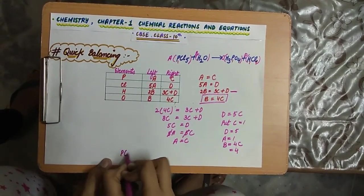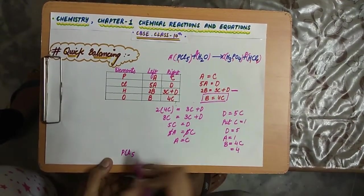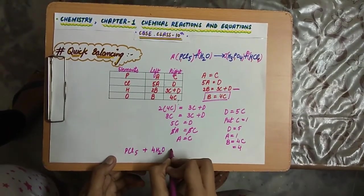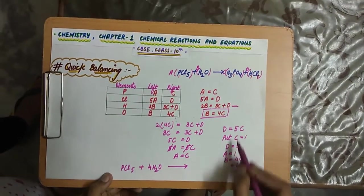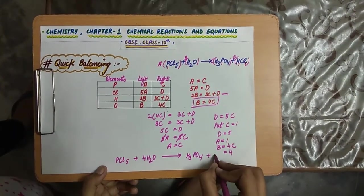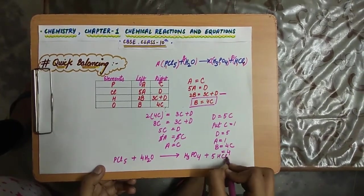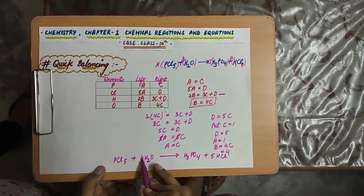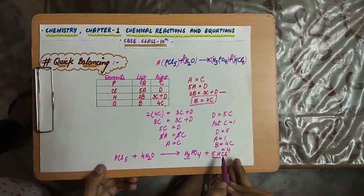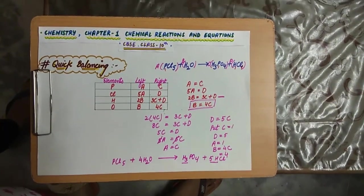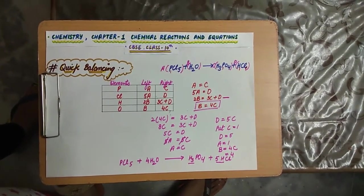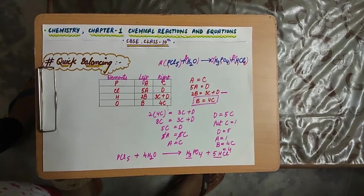Therefore the balanced equation is: PCl₅ + 4H₂O → H₃PO₄ + 5HCl. We can verify: hydrogen has 4 × 2 = 8 on the left, and 3 + 5 = 8 on the right. In this way, our equation can be balanced in a quick and easy manner. For next parts, do watch our next videos.